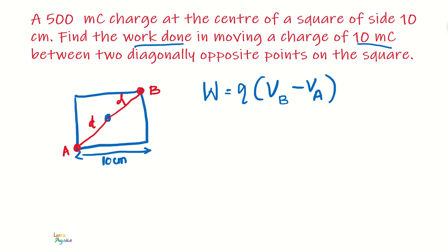So first step is to find out the potential at point A due to the charge 500 millicoulomb. It's 1 over 4 pi epsilon naught, 500 millicoulomb divided by distance D.